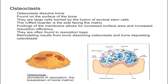These osteoclasts are also typically found in pits of hardened bone, and these pits are called resorption bays on the bone surface. To summarize, remodeling of the bone results from bone dissolving osteoclasts as well as bone depositing osteoblasts. But the main thing to take away from this video is that osteoclasts dissolve bone.